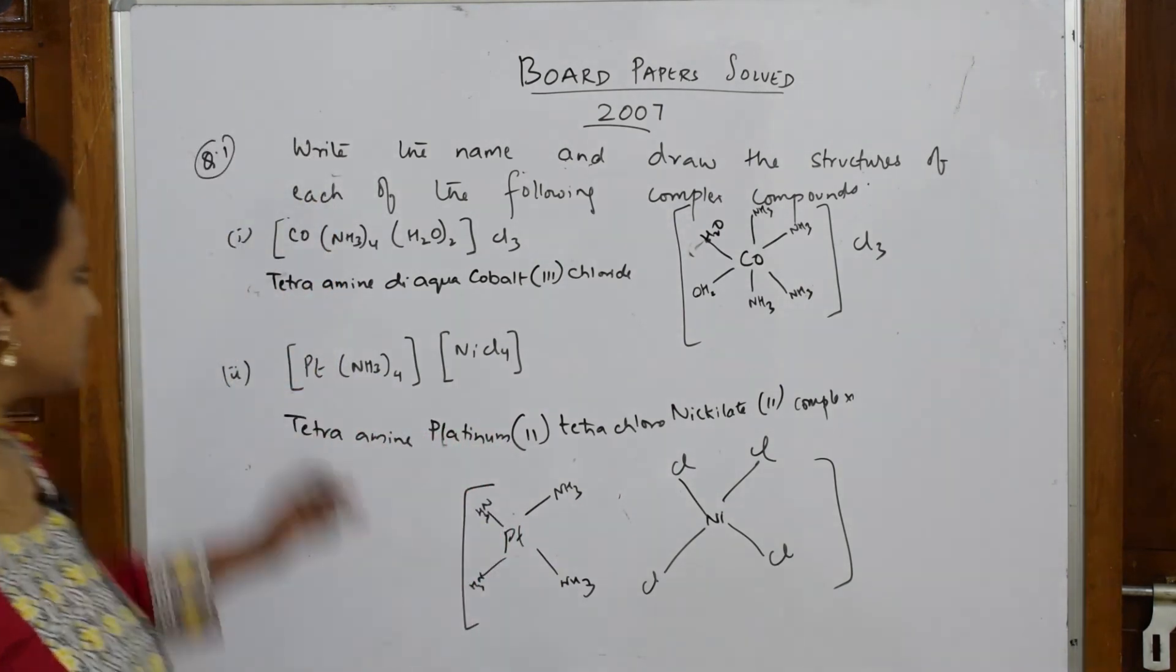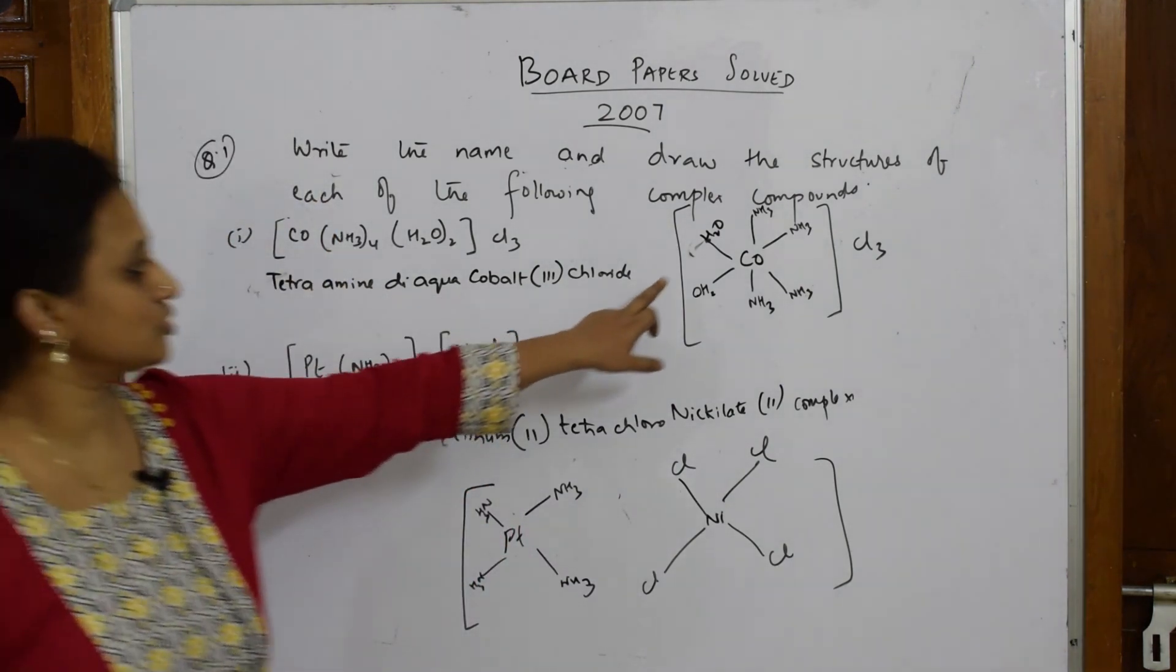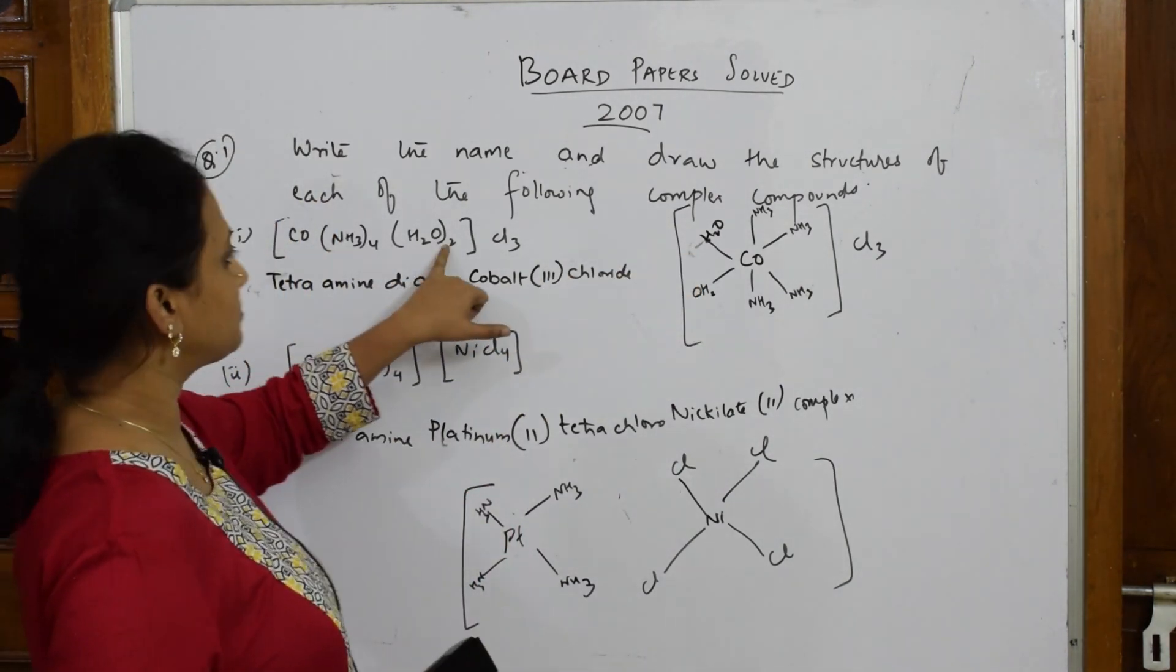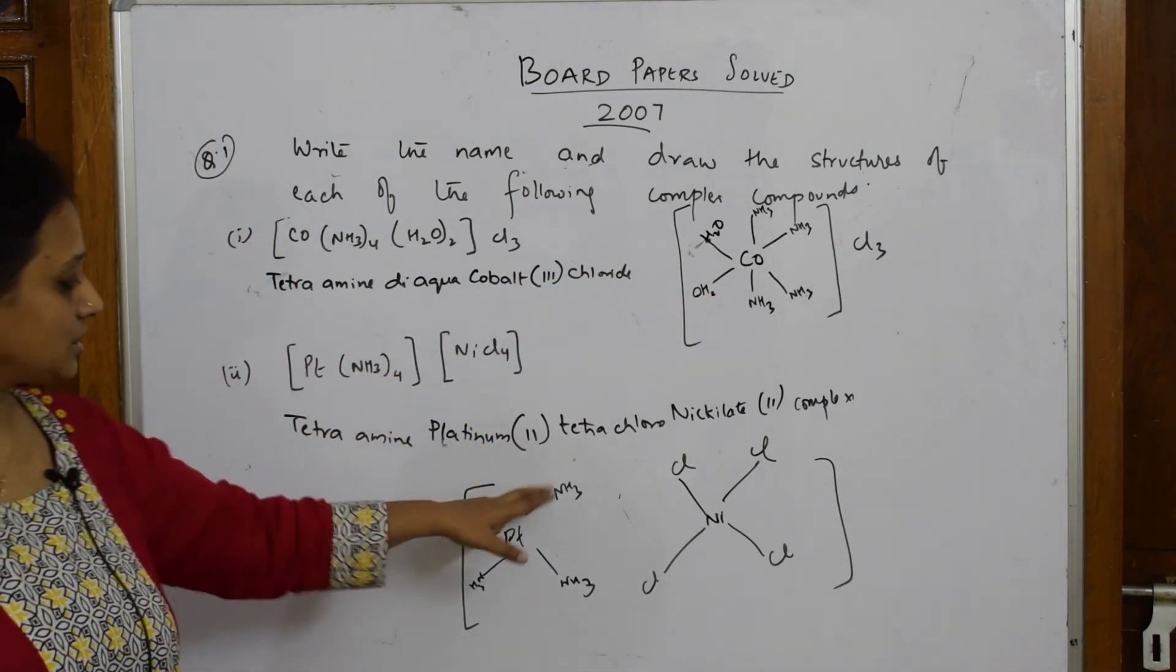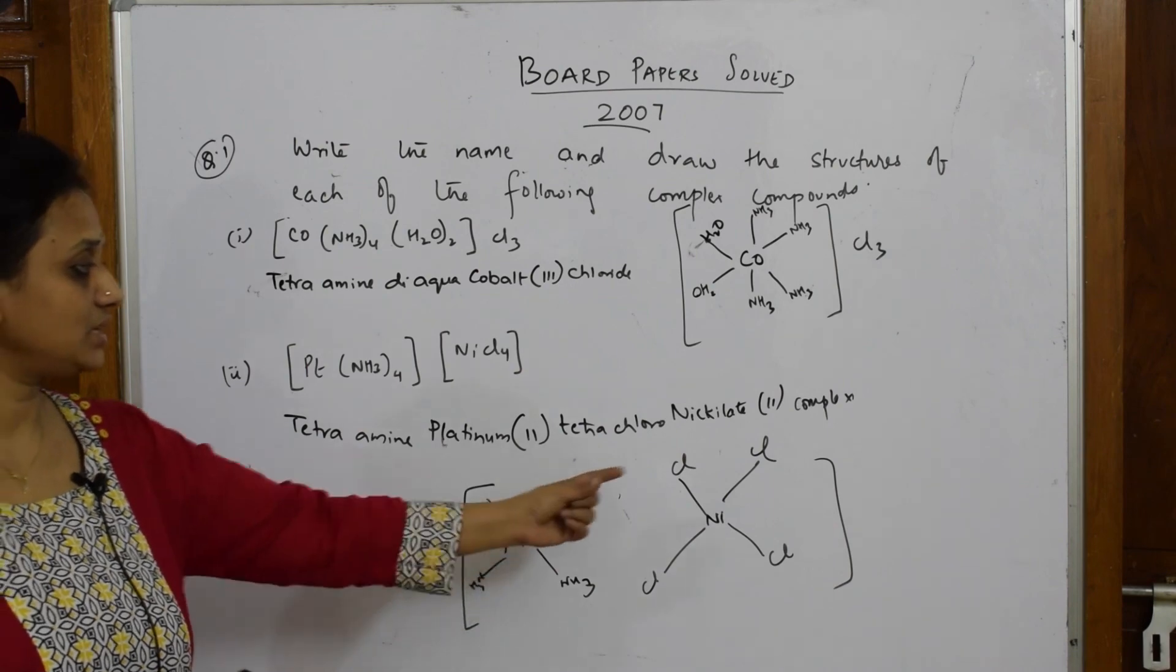So you just simple, isn't it? They've asked you to write the name, you have written. They've asked you to draw the complex. Seeing the coordination number 6 here, they've given me the complex. Tetrahedral arrangement or square planar arrangement, I've made both structures.